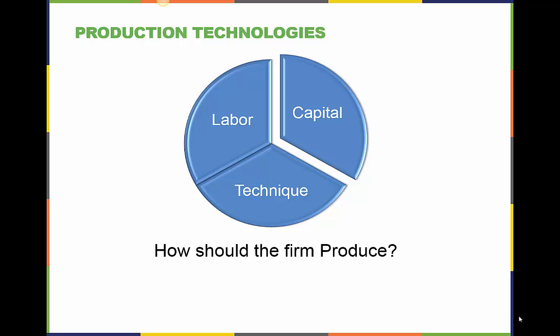How should the firm produce? The answer is simple, using the lowest cost method. As firms combine the components of labor and physical capital, like machines and software, new techniques and ways to combine these resources are derived.